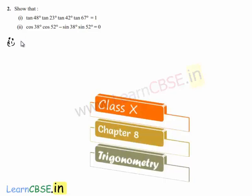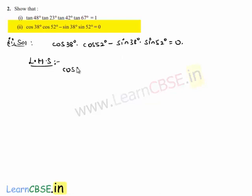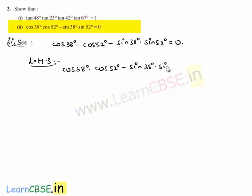Moving on to the second problem solution. We are asked to prove that cos 38 degrees times cos 52 degrees minus sin 38 degrees times sin 52 degrees is equal to 0. To prove this, let us consider the left-hand side: cos 38 degrees times cos 52 degrees minus sin 38 degrees times sin 52 degrees. One term is in terms of cos and the other in terms of sin, so let us convert the whole expression into sin.